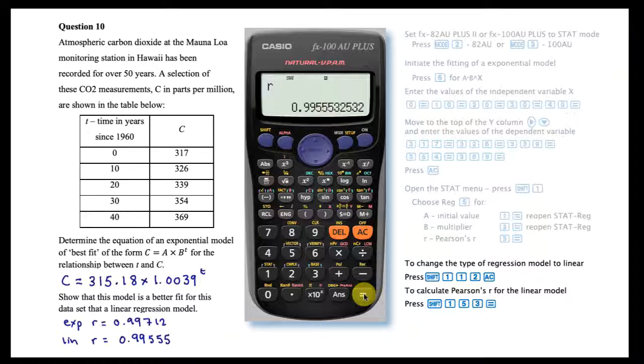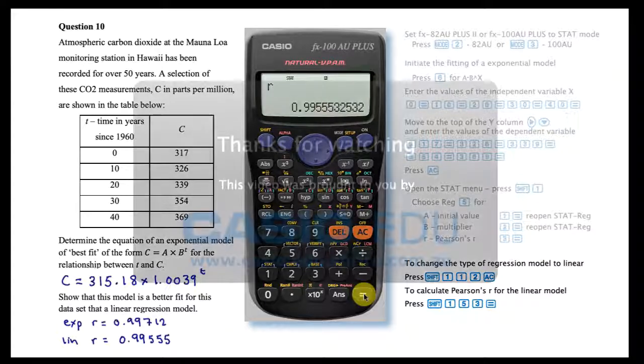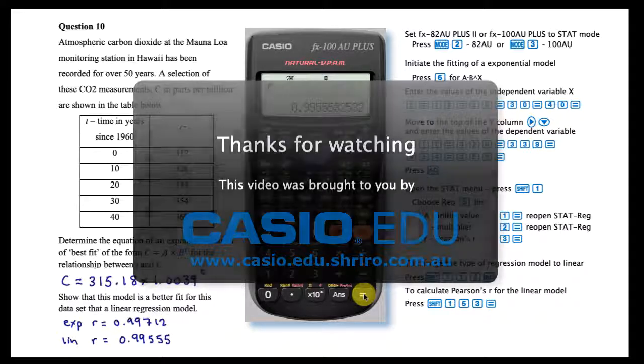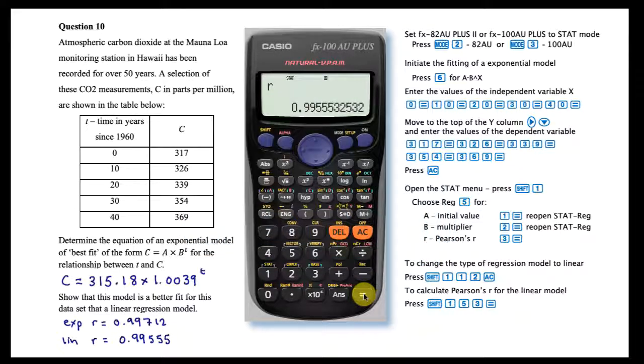The difference in these two R values indicates that an exponential model fits this data set better than a linear one.